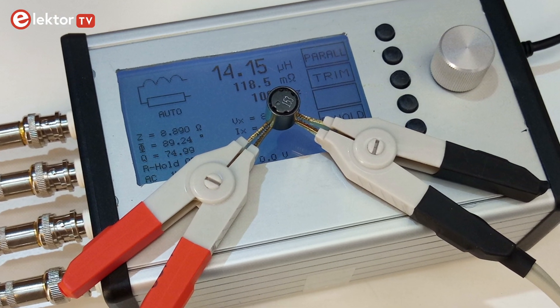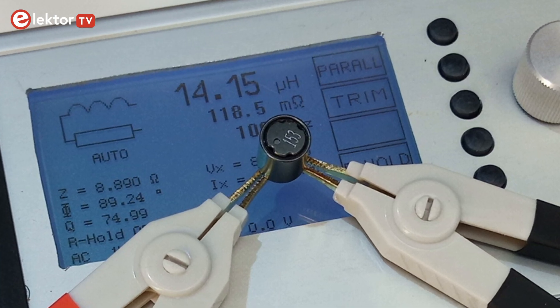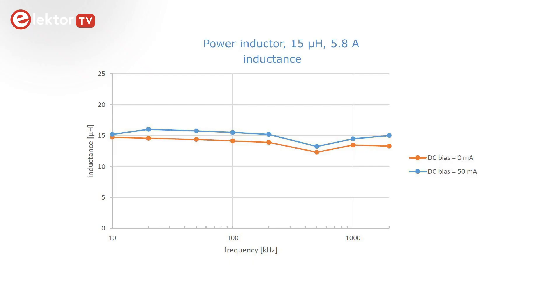On to the power inductor. The inductance value is rather stable over the whole range, with a slight dip at 500kHz. A DC bias current makes the induction's value increase a bit.